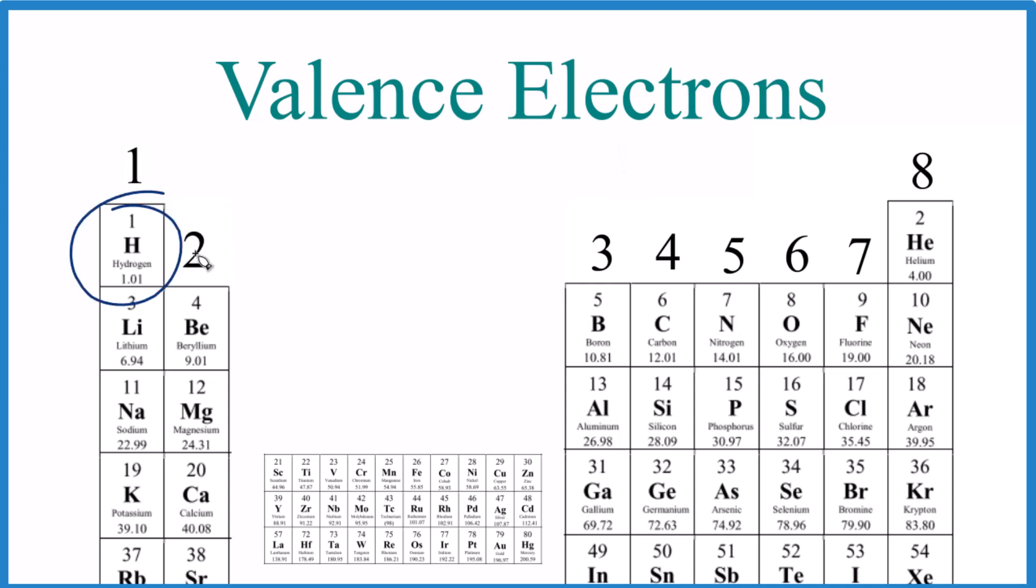Hydrogen, right here, it's in group 1. And this is the trend that we have for valence electrons. Group 1 has 1 valence electron. Group 2 has 2 valence electrons. All of these here have 2 valence electrons.